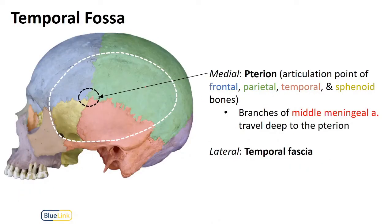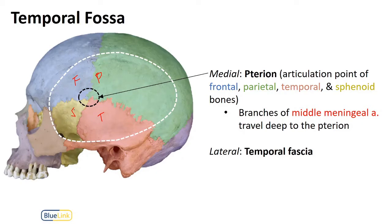The medialmost aspect of the temporal fossa is made up of a point on the skull called the pterion. The pterion is where the frontal, parietal, temporal, and sphenoid bones meet. At this point there are middle meningeal artery branches just deep to it, so an injury here can lead to an epidural hematoma if the middle meningeal artery is disturbed. It is an important point on the lateral side of the skull.